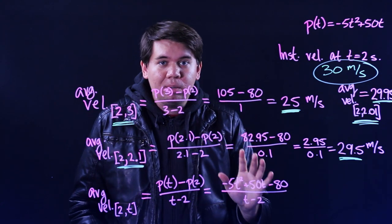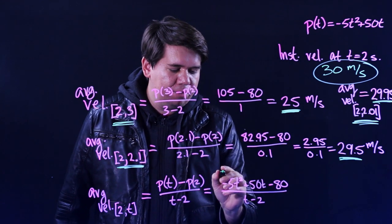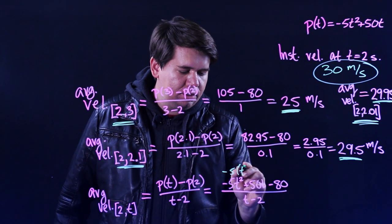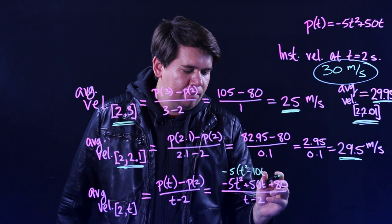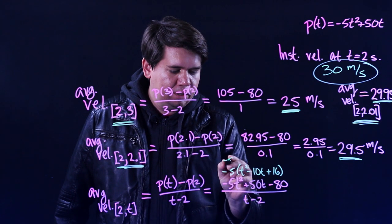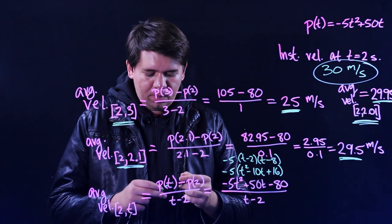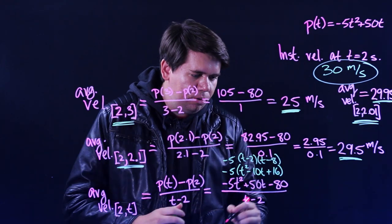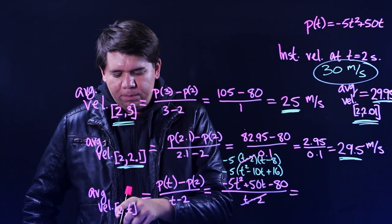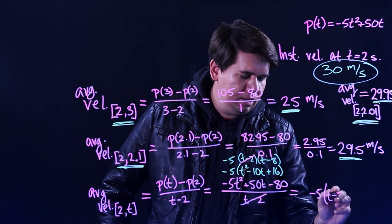Then we want to divide that all by t minus 2. Now, I know this looks like a complete mess, but notice what happens. Up top, we can pull out a minus 5. And if you factor out a minus 5, you're left with a t squared, a minus 10t, and a plus 16. And that expression further factors down. That's just t minus 2 times t minus 8. So then when you go and you divide by the t minus 2, that will just cancel. You're left with the average velocity from 2 to t for any time t is minus 5 times t minus 8.